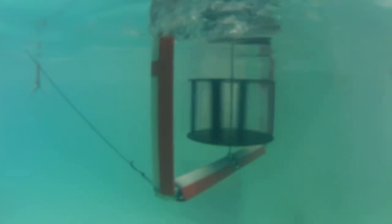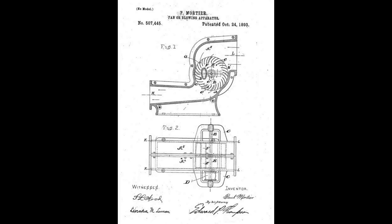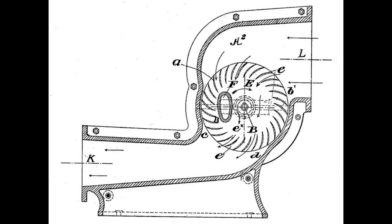Looking at cross-flow wind turbines when examining the Ridgeblade wind turbine made me think of cross-flow water turbines. It was actually invented in 1891 by Paul Mottier with French patent number 215662, also registered in the United States. The main purpose was to utilize it for mine ventilation, but it was overlooked.